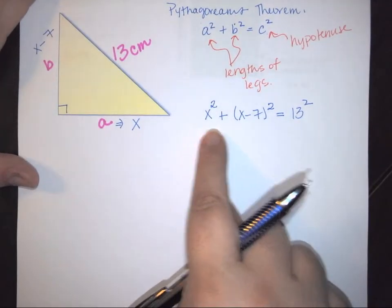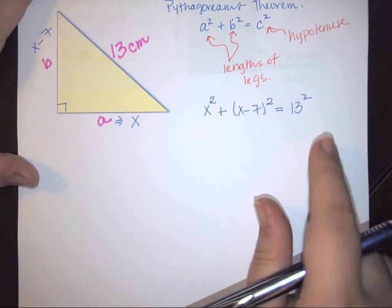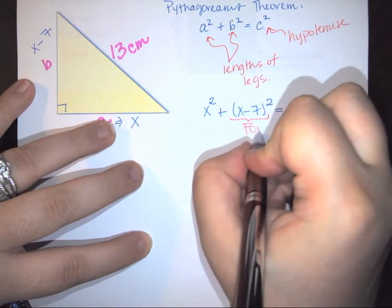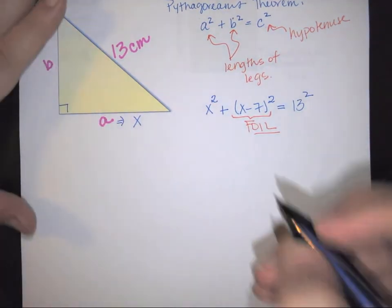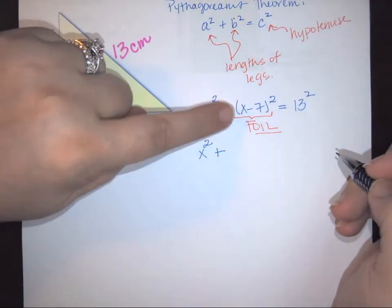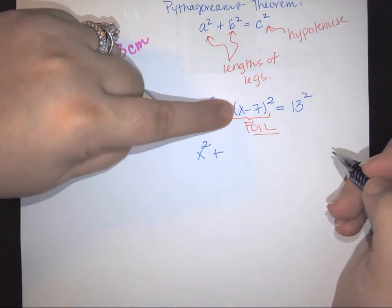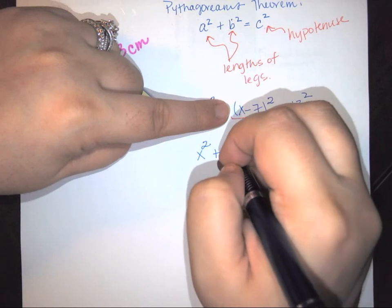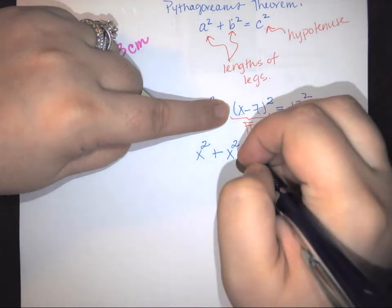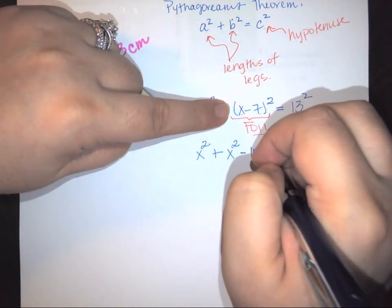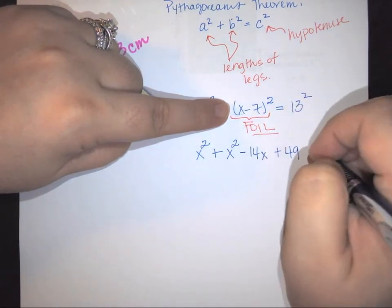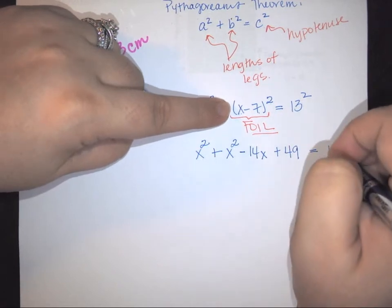So I have a quadratic here that I have to be able to solve. So the first thing that I have to do is I have to take this piece and I have to foil in order to expand it out. So I'm going to have my x squared because that's going to carry down plus. And now I need to foil. So I have x minus seven and x minus seven. So this is going to give me x squared. Then I have x times negative seven and do that twice. So this is minus 14x. And then negative seven and negative seven is a positive 49. And then 13 squared is 169.